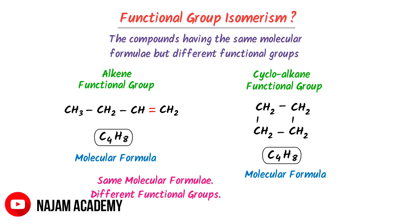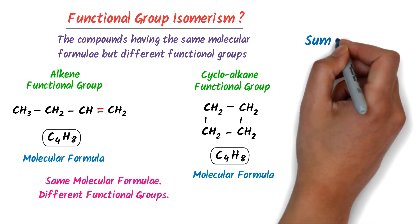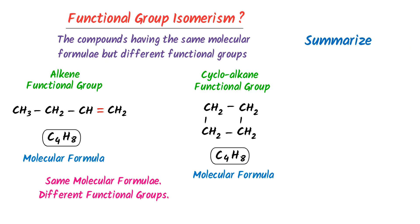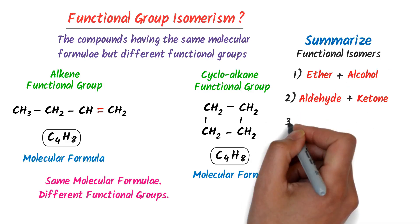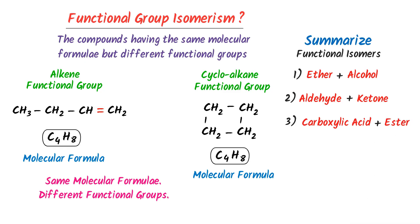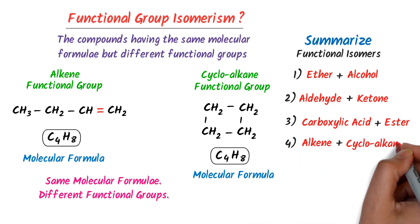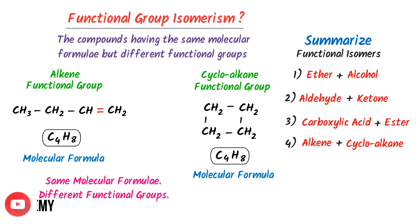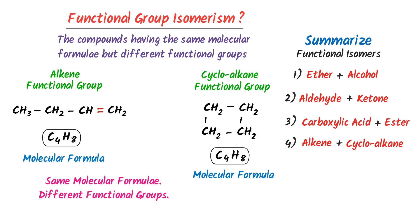So, to summarize this whole lecture: functional isomers exist between ether and alcohol, aldehyde and ketone, carboxylic acid and ester, and alkene and cycloalkane. We have also learned two new functional groups — ether and ester. If you have missed our lecture on functional groups, watch that lecture; its link is given in the description.